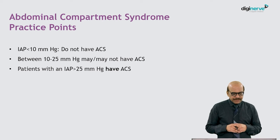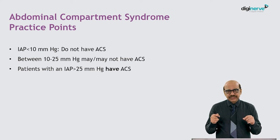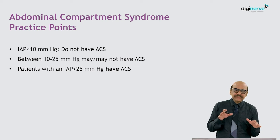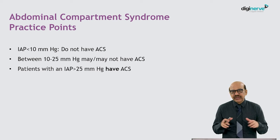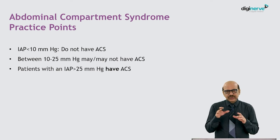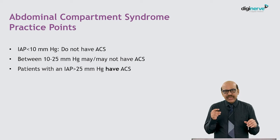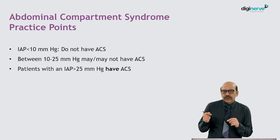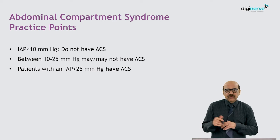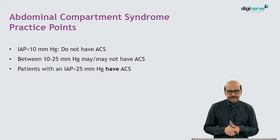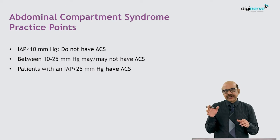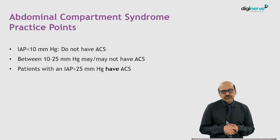Practice points: an intra-abdominal pressure of less than 10 mmHg is generally asymptomatic — the patient may have mild tachycardia but no significant effects on outcome. Those between 10–12 and up to about 25 mmHg may or may not have abdominal compartment syndrome, but they do fall under the definition of intra-abdominal hypertension. Patients with a pressure of more than 20 or 25 mmHg are defined as having abdominal compartment syndrome.